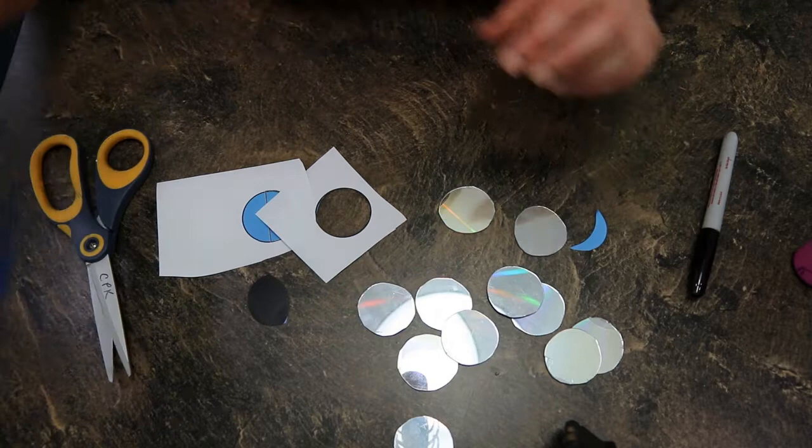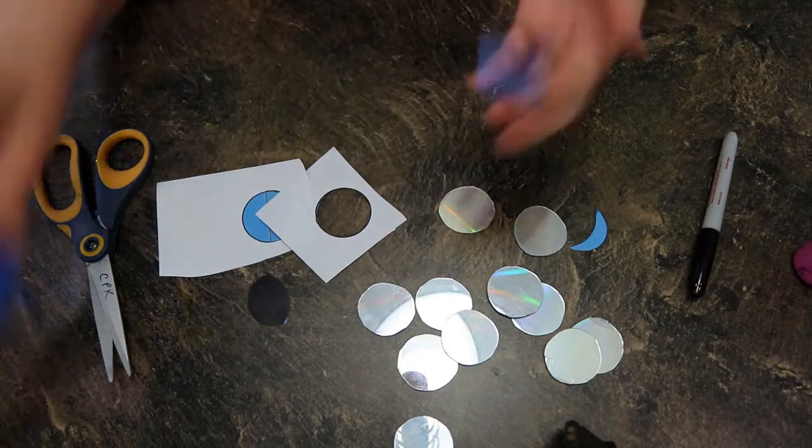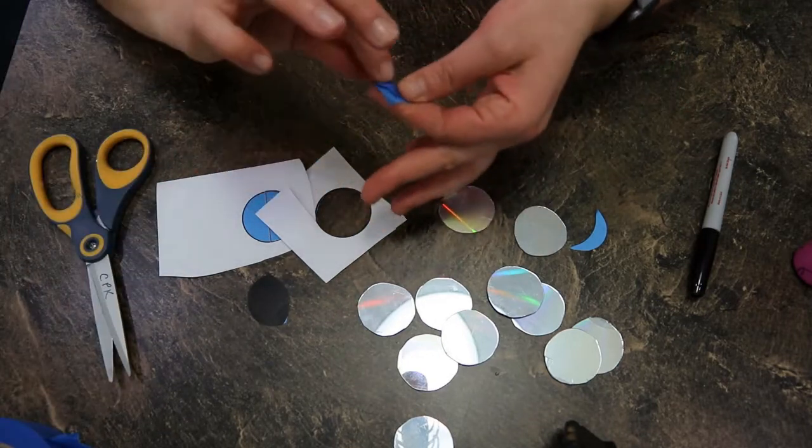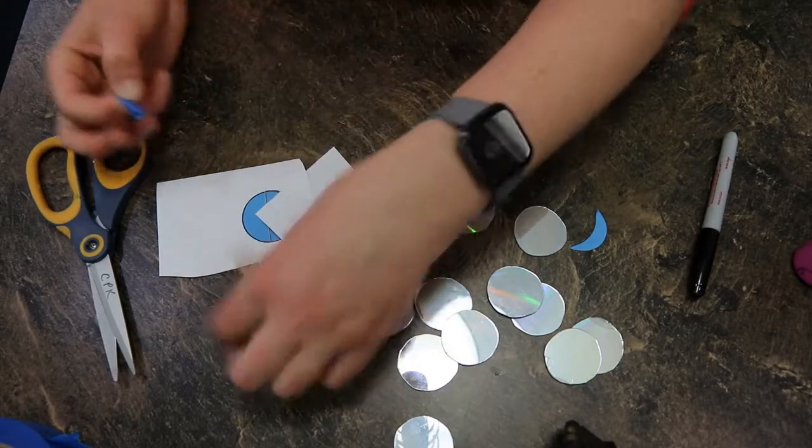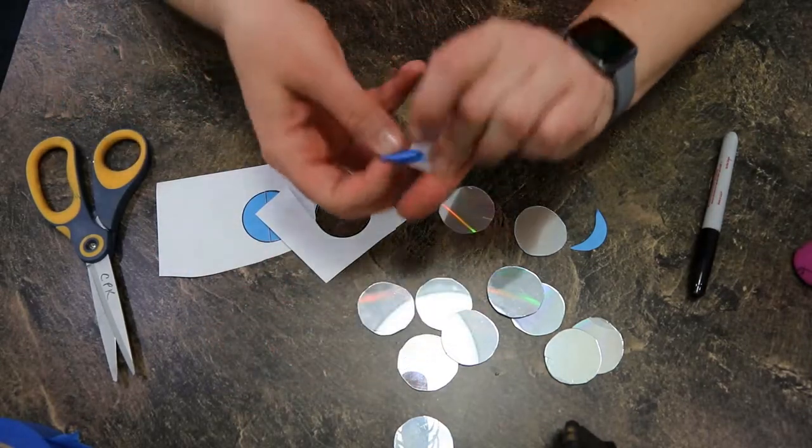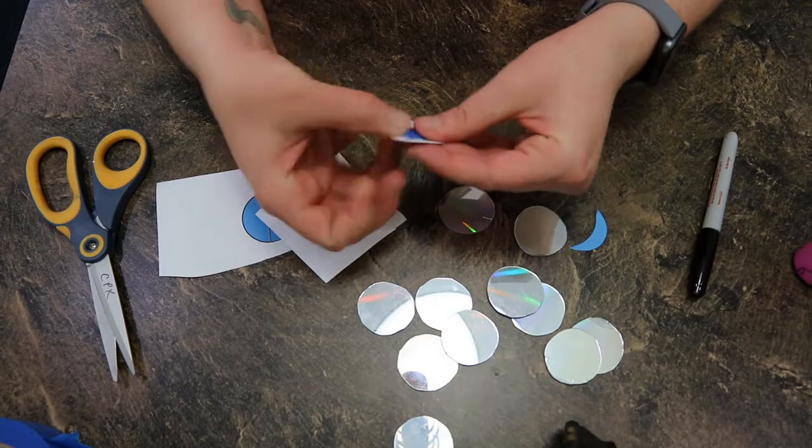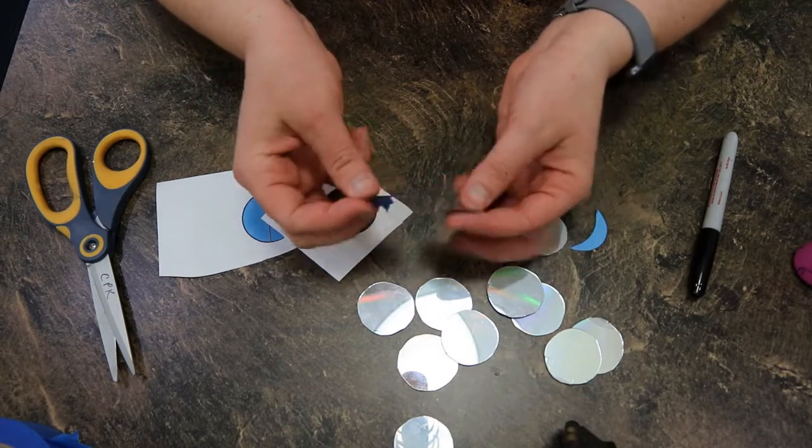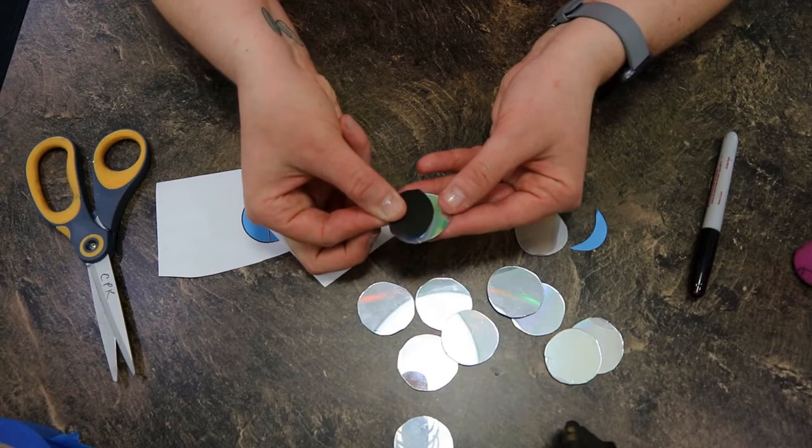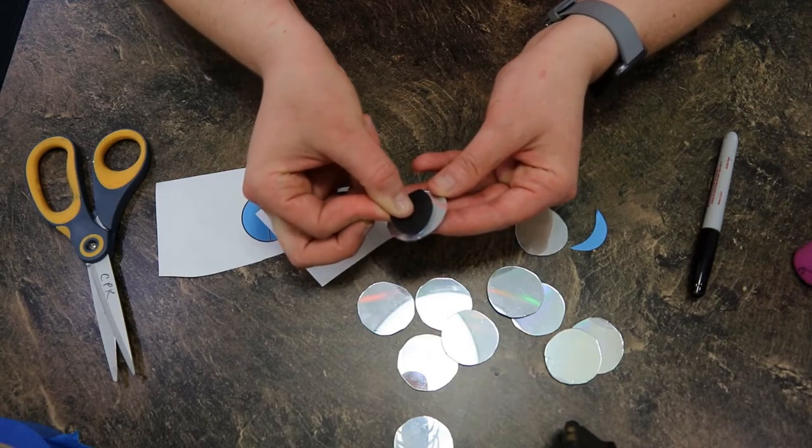And all you're going to do to attach those is to cut just a little piece of tape. Probably made that one a little bit too big. Stick it to the back of our paper and then stick it on the portion of the disc that you would like to stay silver.